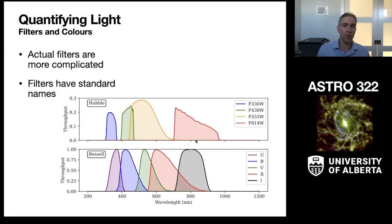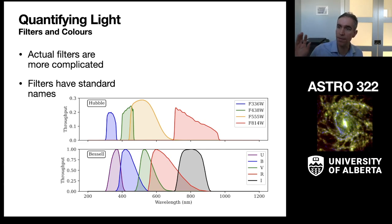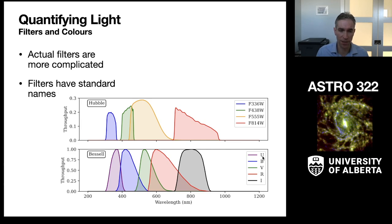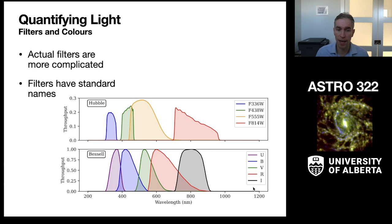These are standard names — I should talk about the Bessel names. These are fairly common: U, B, V, R, and I. This is an older filter set from the 70s, 80s, and 90s. They have nomenclature where U is ultraviolet, B is blue, V is visible (a yellowish-green color gets transmitted), R is red, and I is infrared.